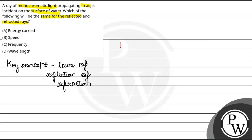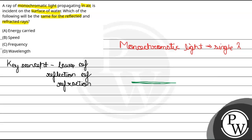हमें कहा गया है कि एक monochromatic light है, और monochromatic light basically वो light होता है जिसके पास single wavelength होता है, यानि कि single value of lambda होता है। तो monochromatic light ray propagate कर रहा है air में, और फिर वो surface of water को incident करता है। तो let's say यह हमने 2 medium ले दिए — यह बीच में separation है, ऊपर यह air है, नीचे यह water है, and light ray किसी angle पर आ रही है। इसको normal ले लेते हैं, सबसे पहले normal line, and light ray यहाँ पर strike करता है।